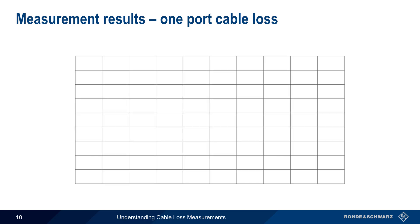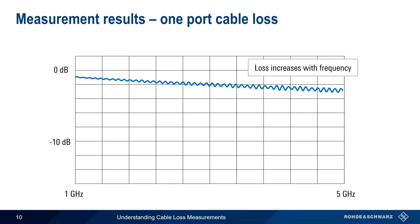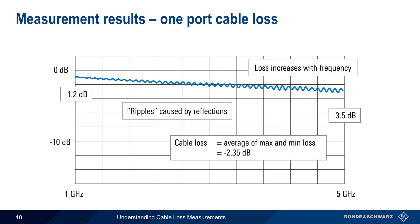Next let's look at some example measurement results. Here we're looking at cable loss as a function of frequency between 1 GHz and 5 GHz, with the Y axis showing loss or attenuation in dB. This trace is typical in two ways. First, note that attenuation increases with increasing frequency. Note also that the trace has a wavy pattern or ripples that are caused by reflections. We can numerically quantify cable loss as a single number by averaging the minimum and maximum values — here minus 1.2 dB and minus 3.5 dB — so the single number cable loss for this particular cable would often be given as minus 2.35 dB.